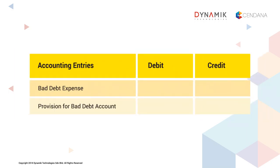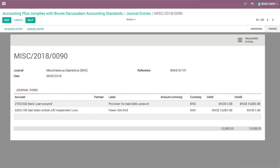From here, we can extract the accounting entries as: debit the bad debt expense with $10,000, and credit the provision for bad debt account with the same amount. This is a journal entry transaction. A completed draft of the journal entry transaction for B-10 provision will look like this. Do note the journal ID for future reference.